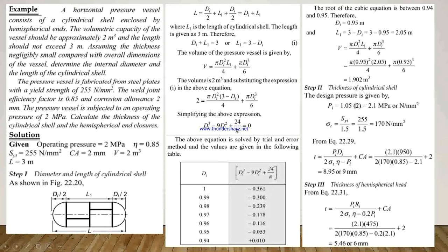In step 2, we calculate the thickness of the cylindrical shell. For that we first calculate the design pressure, given by Pi = 1.05 × 2 (the operating pressure), so Pi = 2.1 MPa. Then σT is the yield strength divided by the factor of safety, where the factor of safety is 1.5. Putting in the yield strength values, we get σT = 170 N/mm².